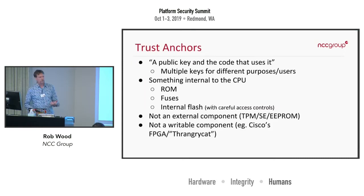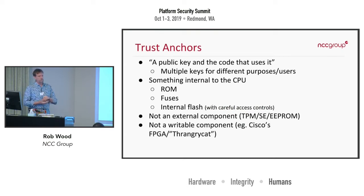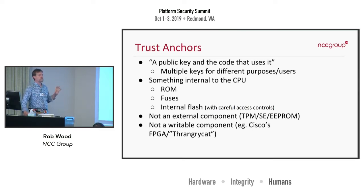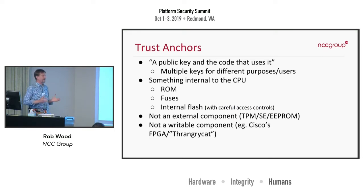Generally you might have multiple keys for different purposes — a recovery key, etc. — and these need to be baked into the ROM. Usually the code is in the ROM and the key is in some kind of fuses, because as a chip vendor you don't know which key your OEM is going to want to use. So you give them the flexibility of programming that public key into fuses. Once set, it can't be changed — useful because now an attacker can't change it. We have seen some devices store it in flash, which can be done if you get the access controls correct, but most cheap microcontrollers have really poor access controls.